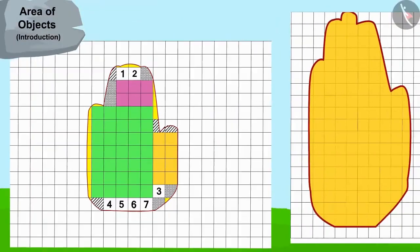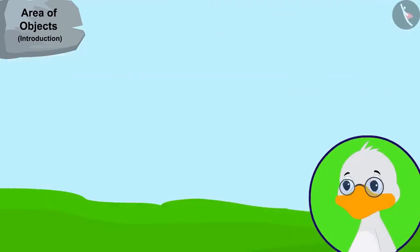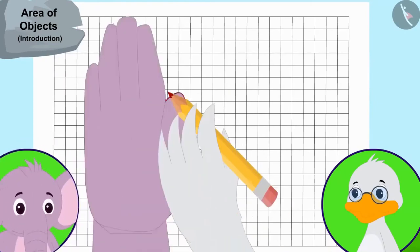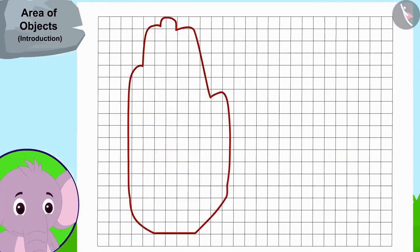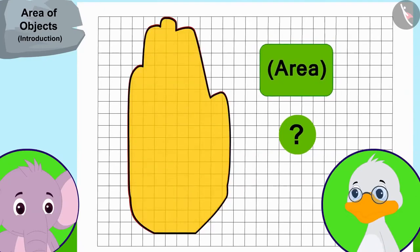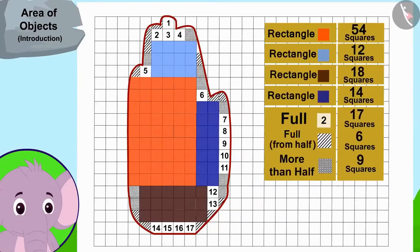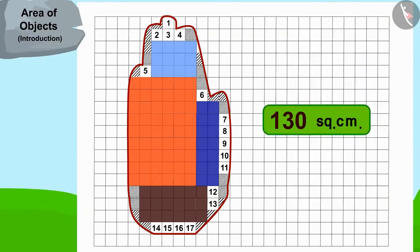But this is not the same as the hand impression on the door. So uncle continued his search and traced Appu's hand. The impression of Appu's hand is shown here. Can you find the area of Appu's hand by the process used by uncle? You can find the area of Appu's hand impression by making rectangles. The area of Appu's hand impression is one hundred and thirty square centimeters.